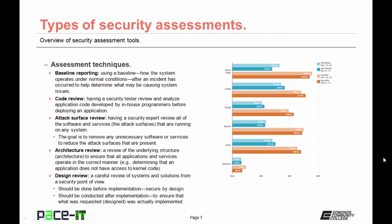There are also different types of assessment techniques. The first is baseline reporting, which is the process of using a baseline after an incident has occurred to help determine what may be causing system issues. The baseline is a report on how the system operates under normal conditions, and that baseline is compared against what is occurring now. Then there are code reviews — having a security tester review and analyze application code developed by in-house programmers before deploying an application. Attack surface reviews involve having a security expert review all of the software and services running on any system, with the goal of removing unnecessary software or services to reduce the attack surfaces present.